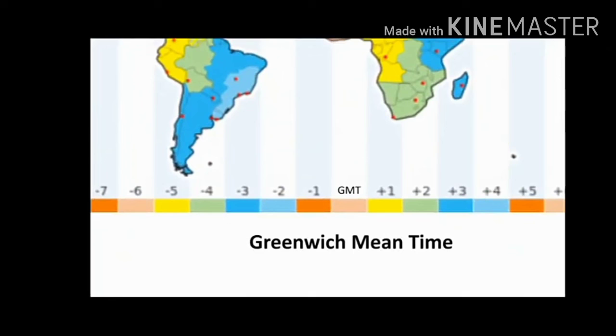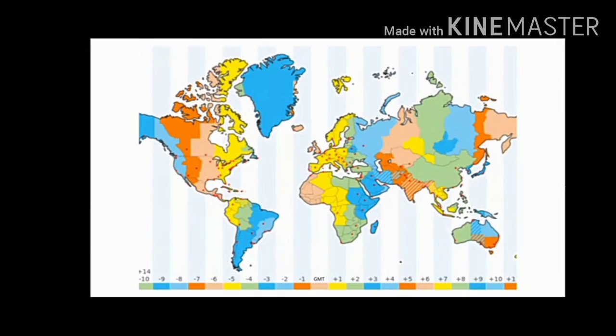Every 15 degrees east or west of the Greenwich Meridian, the time changes by one hour. East is ahead and west is behind the Greenwich Mean Time.